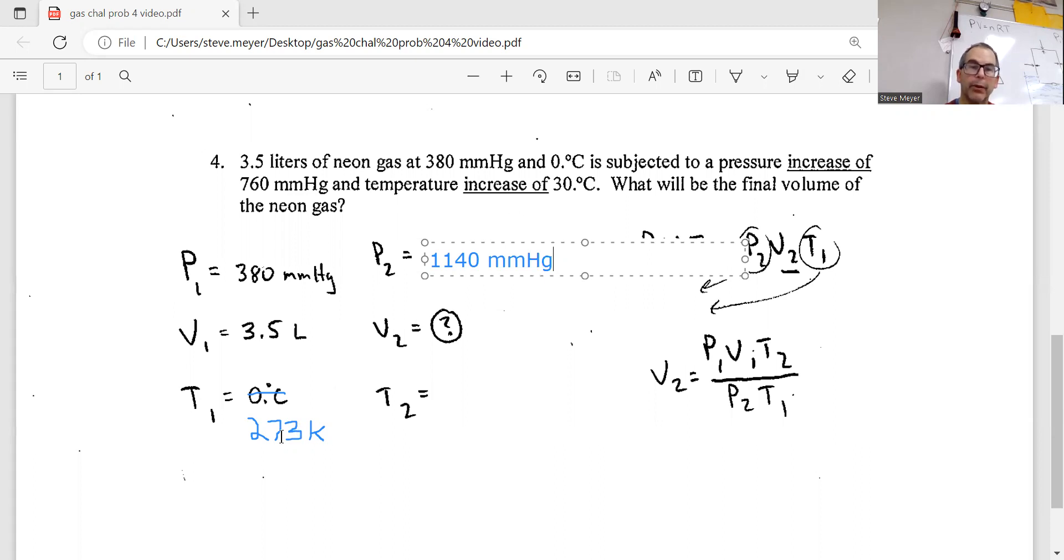So we are increasing it by 30 degrees, so it'll be either 30 degrees Celsius, which is 303 Kelvin, or 273 Kelvin, and again, we'd add 30 degrees, because a change of 30 degrees Celsius is the same as a change in 30 degrees Kelvin. So I'm going to call this 303 Kelvin, right there.